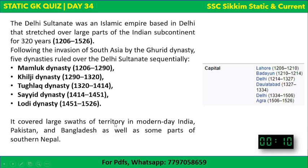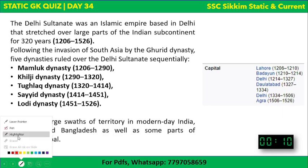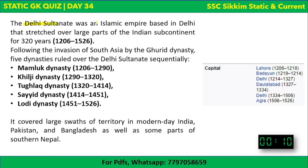The Delhi Sultanate was an Islamic empire based in Delhi that stretched over large parts of the Indian subcontinent for 320 years. Following the invasion of South Asia by the Ghurid dynasty, five dynasties ruled over the Delhi Sultanate sequentially: Mamluk, Khilji, Tughlaq, Sayyid, and the last dynasty was the Lodi dynasty.